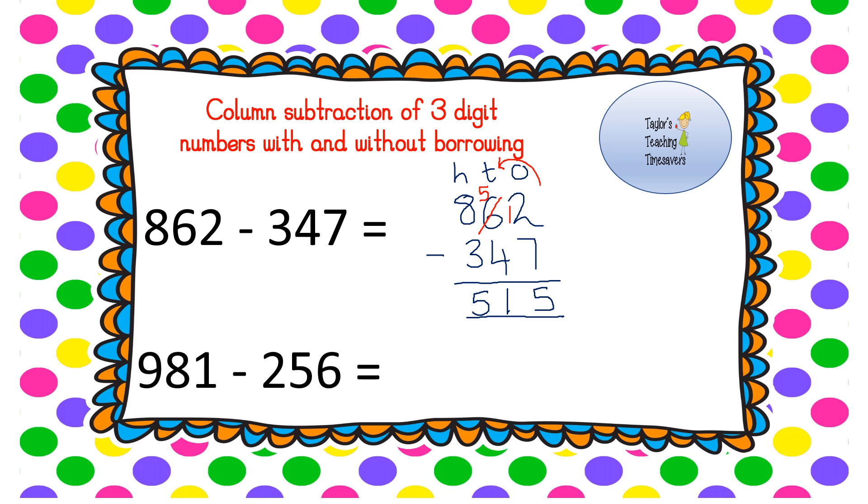Let's change the color again for our next one. 981 take away 256. I'm sure you've already spotted the ones, the top one is smaller than the six, so we can't do it. You know exactly what it is we're going to do. We're going into the tens to borrow, so we borrow our 10 from our 80. We knock our 80 down to 70 and we put that extra one in our ones column so it's now 11 take away 6.